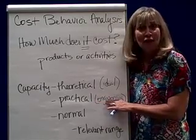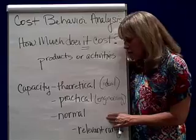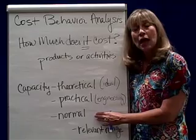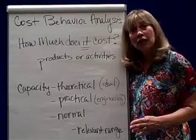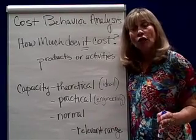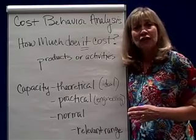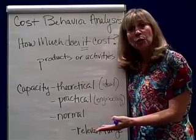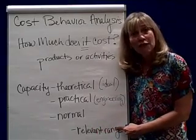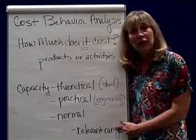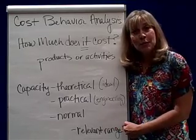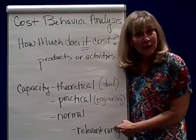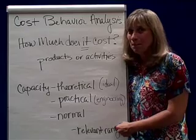What managers use to estimate cost behaviors is what we call normal capacity. Normal capacity is looking at our activities or costs within the normal range of activity — in other words, the lowest level of production and the highest level of production. Within that relevant range of activity, we figure out whether costs have a fixed, mixed, or variable behavior.